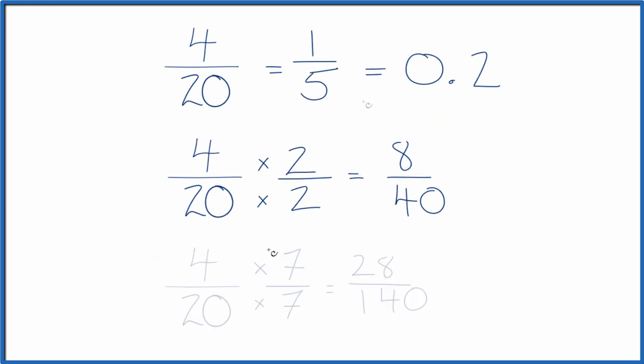Let's try one more. So here we multiply by 7 over 7, which is just 1. We get 28 140ths, another equivalent fraction for 4 over 20.